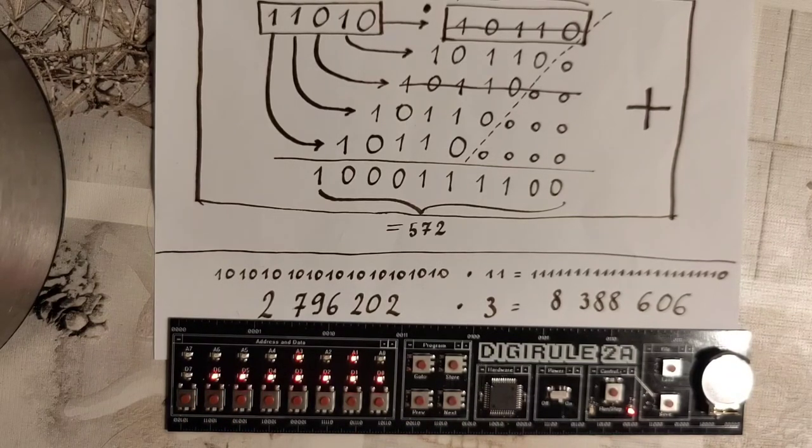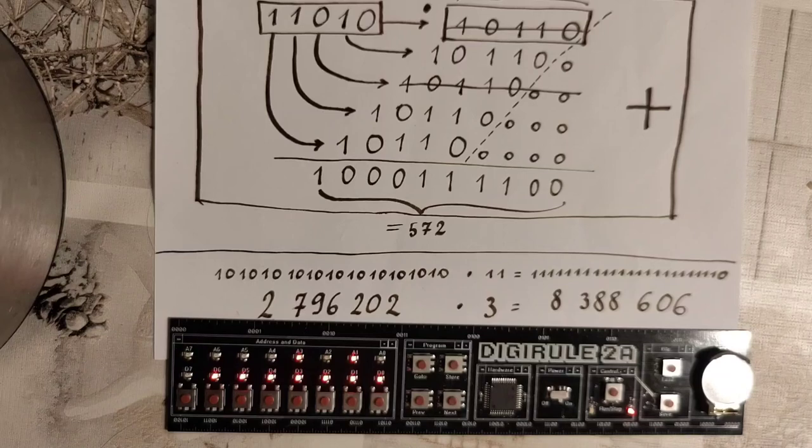And the final one where just the top bit is missing. So thereby I hope I have made good on you and that you're not all too disappointed. So there you have 24 or more specifically actually 23 bit multiplication on the Digirule.